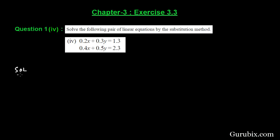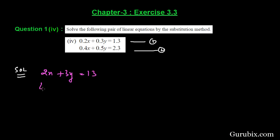First, we shall label the given equations as equation number 1 and equation number 2. Now we shall multiply both equations by 10 on both sides. Multiplying equation 1 by 10 gives us 2x + 3y = 13, and multiplying equation 2 by 10 gives us 4x + 5y = 23. We shall call these equation number 3 and equation number 4 respectively.